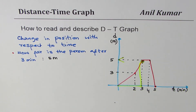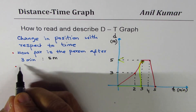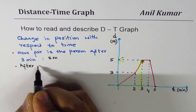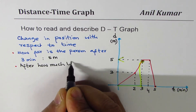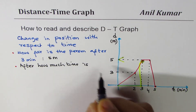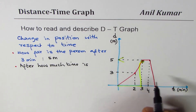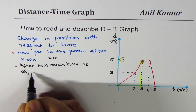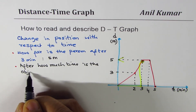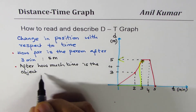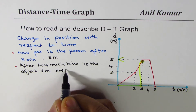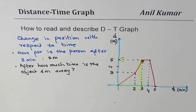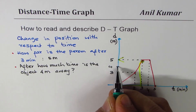The second type of question: after how much time is the object four meters away? To answer this, go along the y-axis to four meters and draw a horizontal line. You will find that it intersects the graph at two different times, and you must mention both — that's very important.